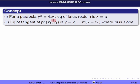For the parabola y² equal to 4ax, the equation of the tangent at point (x₁, y₁) is given using the slope m of the tangent. Let's go to the question.